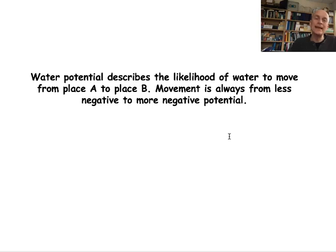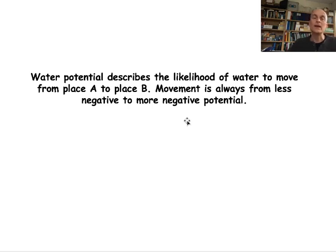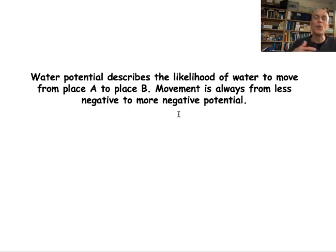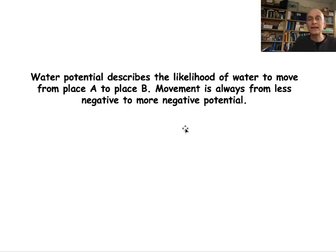The water potential describes the likelihood of water moving from place A to place B — either into the plant or out of it. In drought or salty conditions, water can be lost from the plant to its surroundings. The movement of water is always from a less negative to a more negative potential. In most cases the values calculated are negative, so water moves from the less negative to the more negative value.